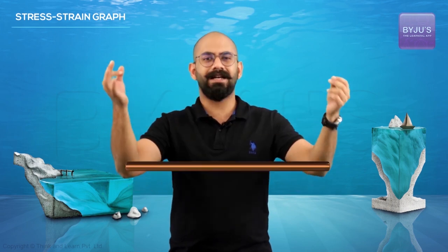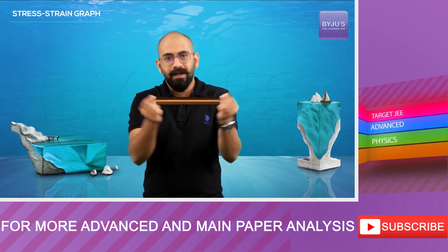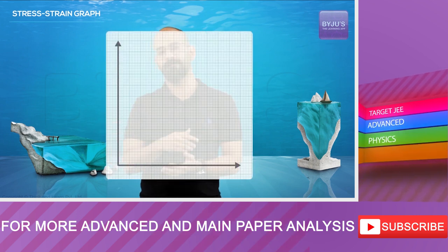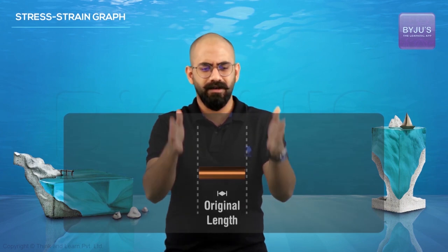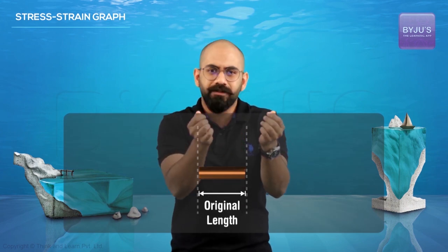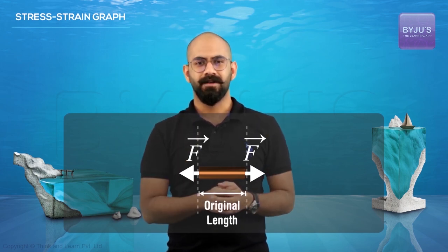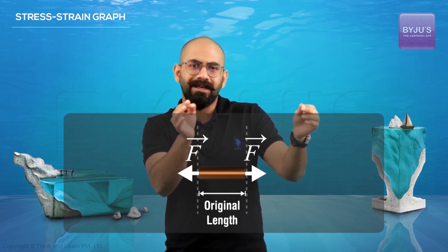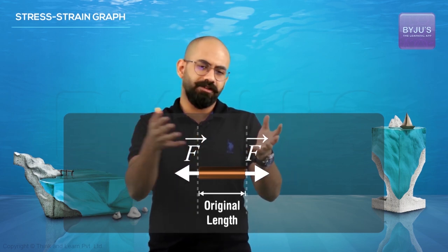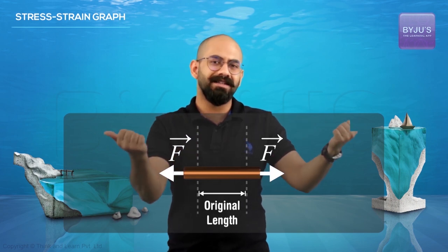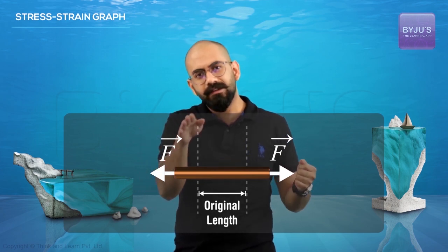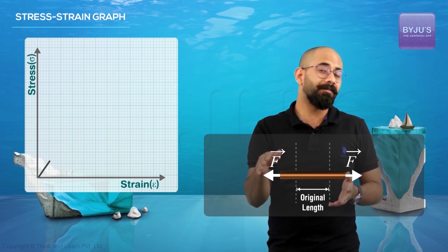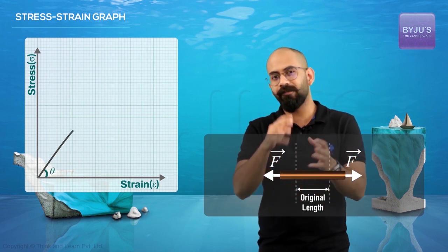Let's take a metallic wire and plot the stress versus strain graph. We'll apply a stress, observe the strain, and plot a graph with stress on the y-axis and strain on the x-axis. So as I keep increasing the stress, from Hooke's law we know the strain will also increase. Therefore, as I keep increasing the force, the elongation will keep increasing, and if you draw the graph it will be proportional — a straight line.